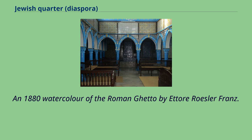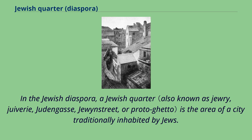An 1880 watercolor of the Roman Ghetto by Ettore Rosseller Franz. In the Jewish Diaspora, a Jewish quarter is the area of a city traditionally inhabited by Jews.